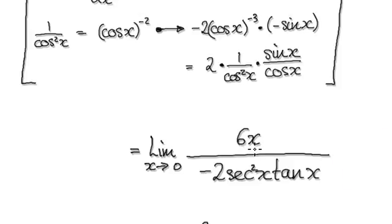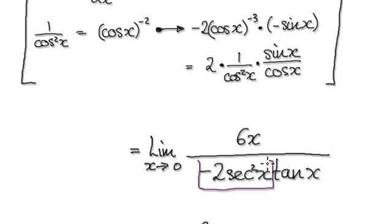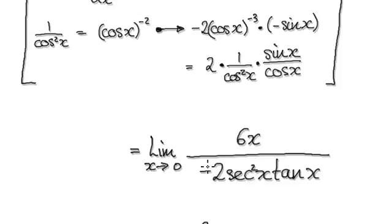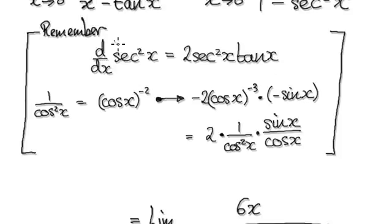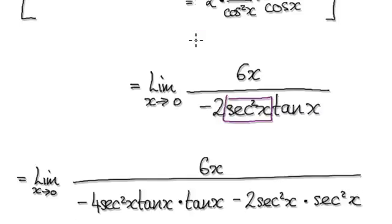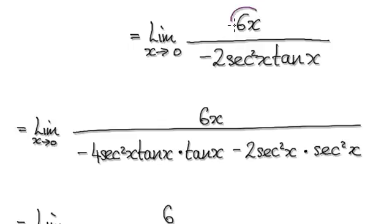So we can differentiate it again. Remember, differentiating this requires a product rule. We need to differentiate this and leave the other factor the same, then leave the first factor the same and differentiate the second. Just remember that when you differentiate secant squared x tan x, it will give you the expression shown here. So we need to differentiate this whole expression.